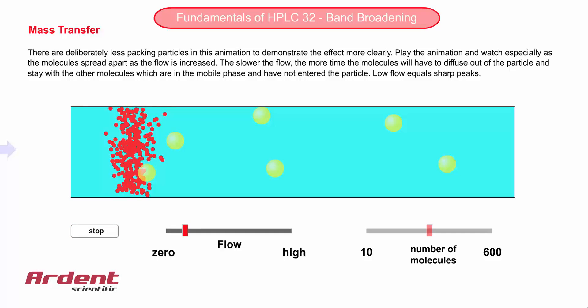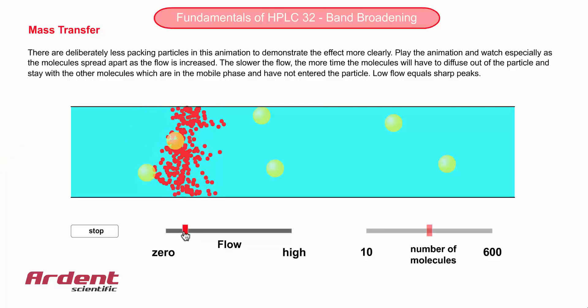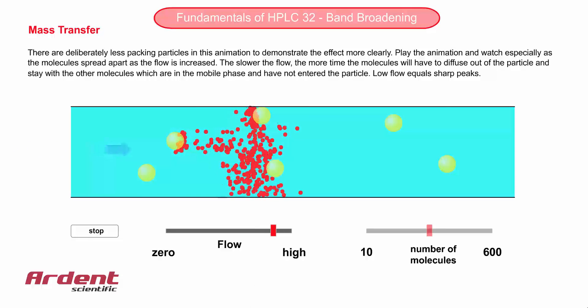Now, if longitudinal diffusion was all there was to it, it would make sense to run the pump with a high flow rate and mobile phase velocity, and this would minimize band broadening.